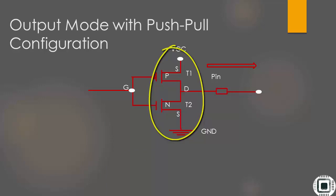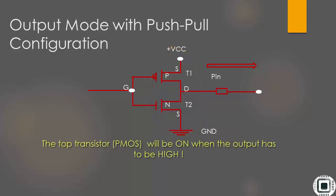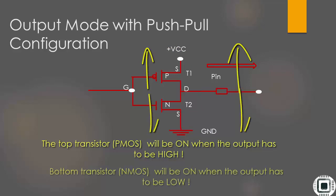Push-pull output actually uses two transistors. Each will be on to drive the output to the appropriate level. The top transistor will be on when the output has to be driven high, and the bottom transistor will be turned on when the output has to go low.